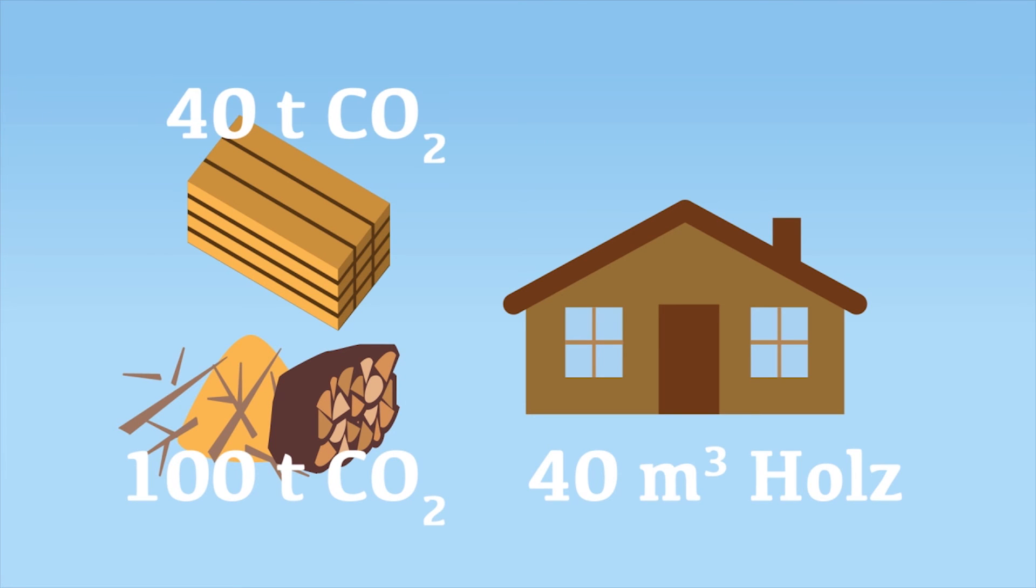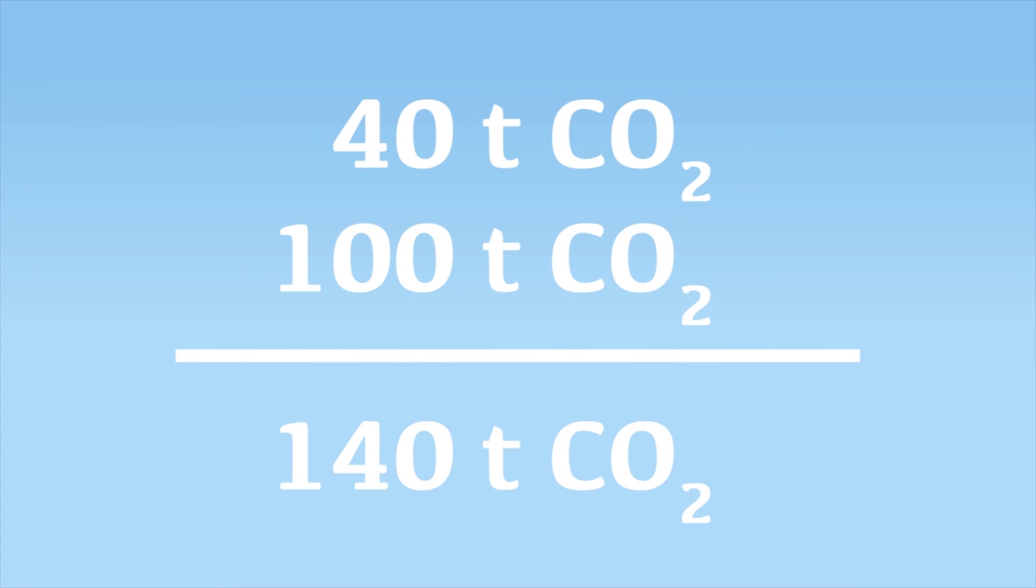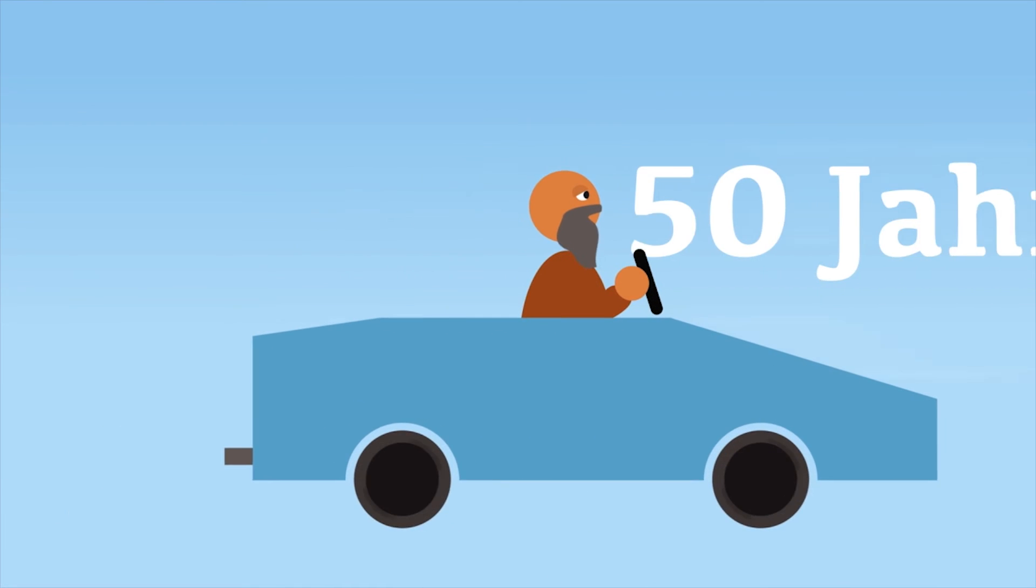Another 40 tons of CO2 are stored in the wooden structure. In this way, the wooden house will save more than 140 tons of CO2 from being released into the atmosphere. This amount roughly equals 50 years of driving a car.